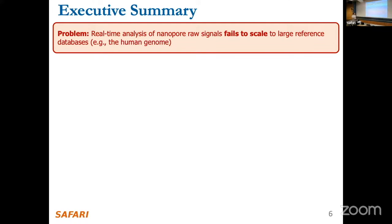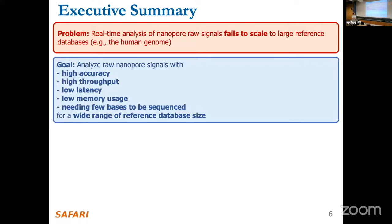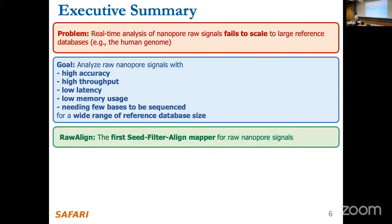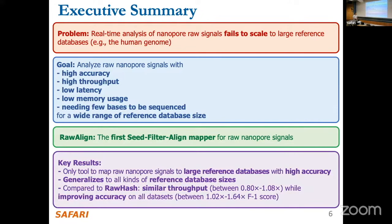Our goal is to get all target metrics right — throughput, low latency, high accuracy, low memory usage — and for a wide range of reference database sizes. You want one tool: just give it data and it does its thing without special configuration. We propose RawAlign, the first seed-filter-align mapper for raw nanopore signals. It does a really good job mapping raw signals to large reference databases with high accuracy and generalizes well.